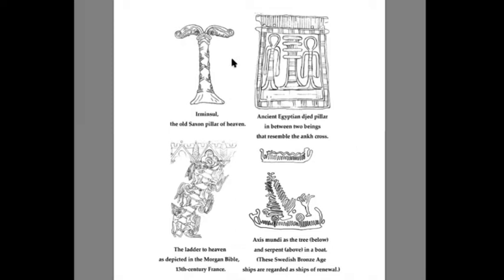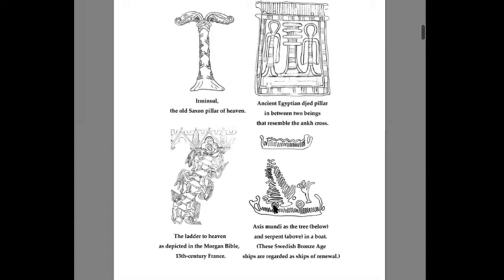Here we can see various depictions of the world tree. Here is the world tree as the pillar of heaven — the Irminsul. Here is the pillar of heaven from Egyptian mythology — the Djed pillar. And here we see the world tree of life on a ship, which gives the impression of the channel that takes us to the other realms. This is from Bronze Age Europe. And here we can see the ladder from the Morgan Bible, 13th century, where we can see the angels ascending and descending on this heavenly ladder into the higher realms — it's also called the stairway to heaven in some younger traditions.